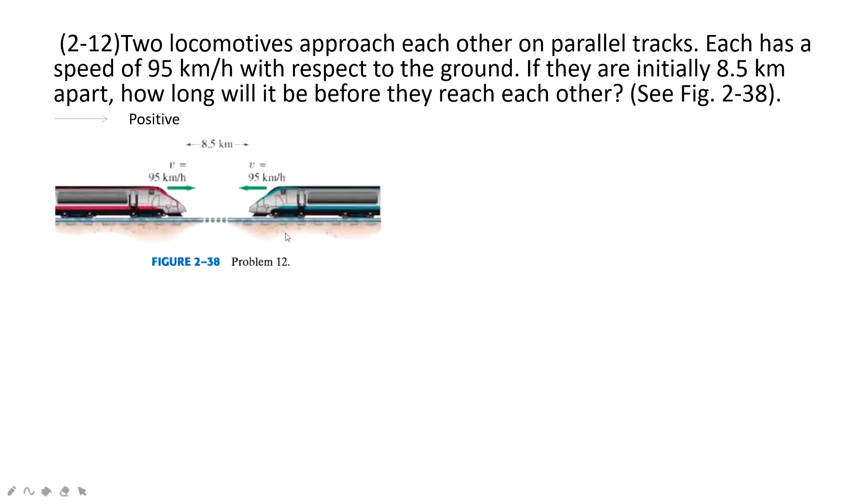Chapter 2 gave us a picture. We can see that there are two locomotives that approach each other on parallel tracks. Each has a speed of 95 km per hour with respect to the ground, and they are initially 8.5 km apart. How long will it be before they reach each other?